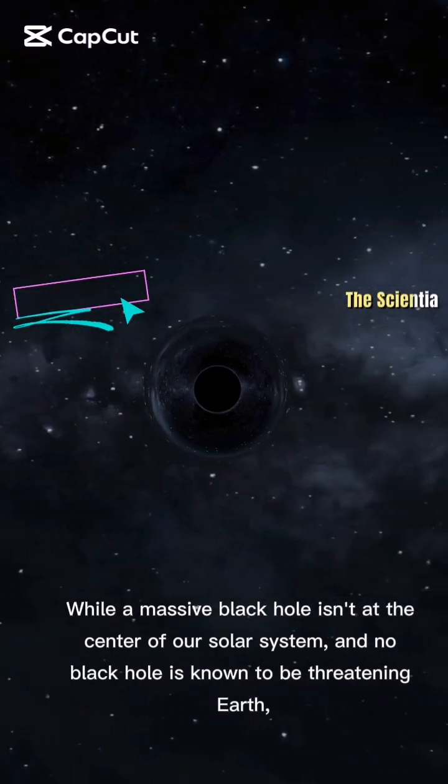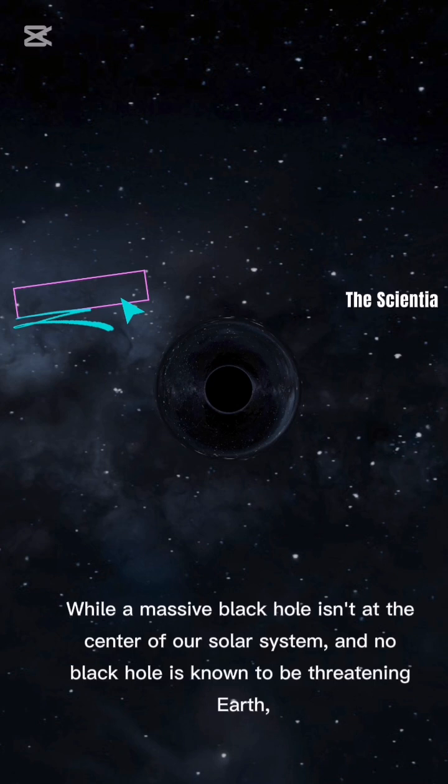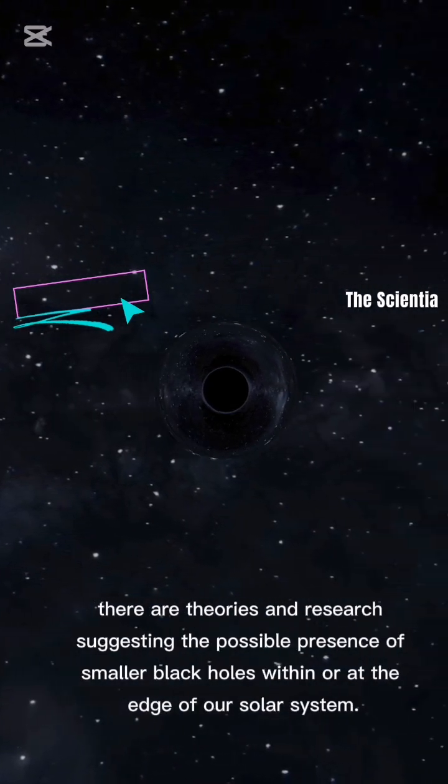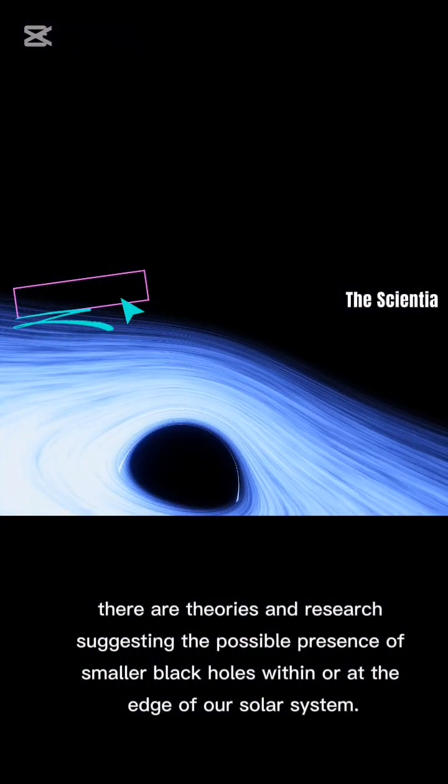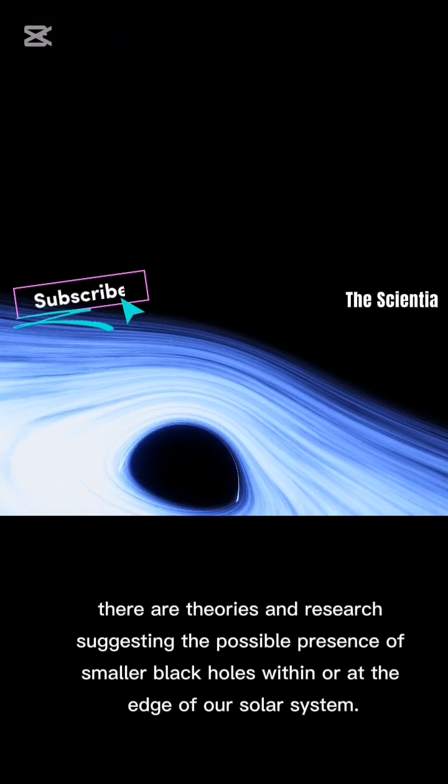While a massive black hole isn't at the center of our solar system, and no black hole is known to be threatening Earth, there are theories and research suggesting the possible presence of smaller black holes within or at the edge of our solar system.